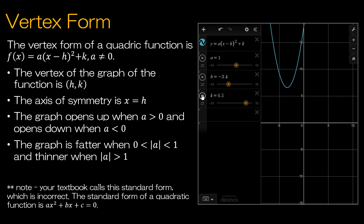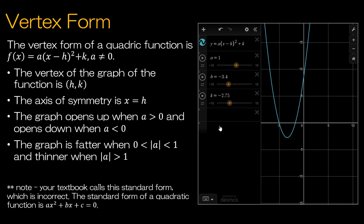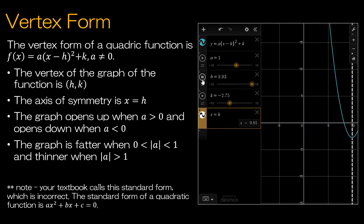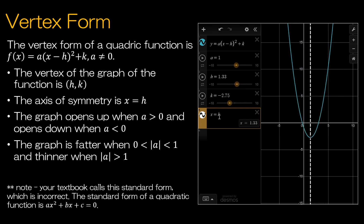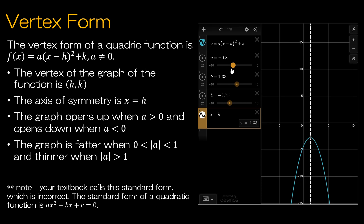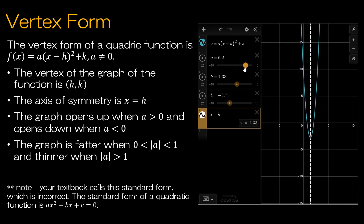The k value is just the y-value of your vertex, and you can move it up and down. The axis of symmetry is always the line x = h. It's just an imaginary line that cuts through the vertex, and it moves wherever the vertex moves. The x-value of the vertex is the same as the x-value of the axis of symmetry. If a is positive, the graph opens up; if a is negative, the graph opens down. A value between 0 and 1 makes it fatter; a larger number makes it skinnier.